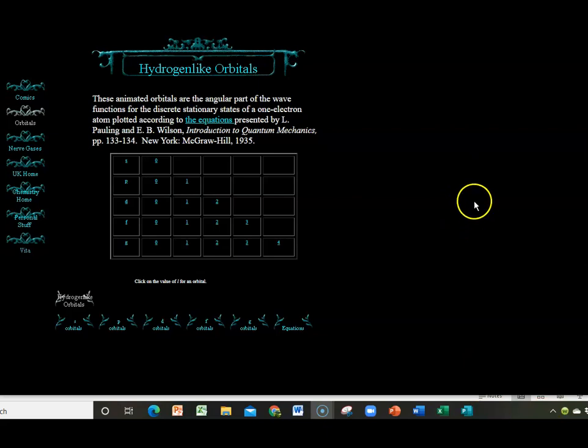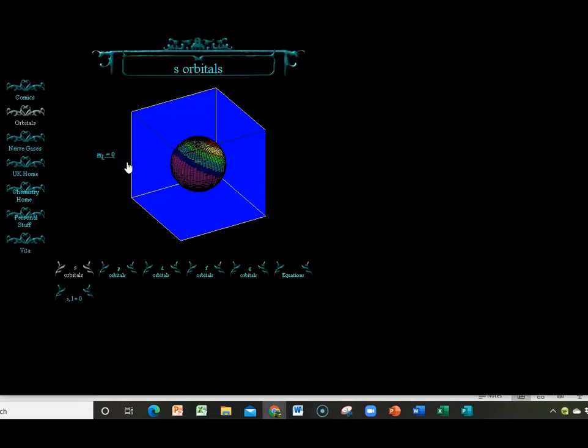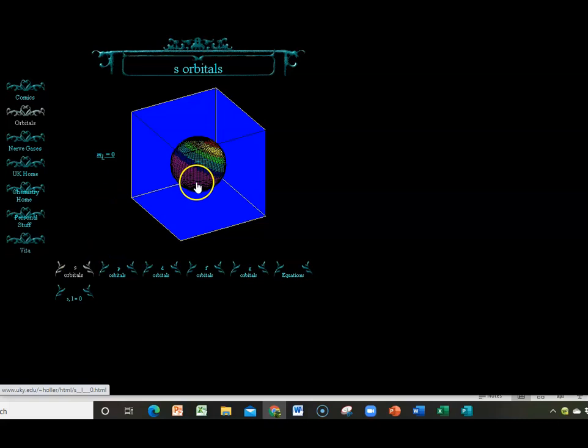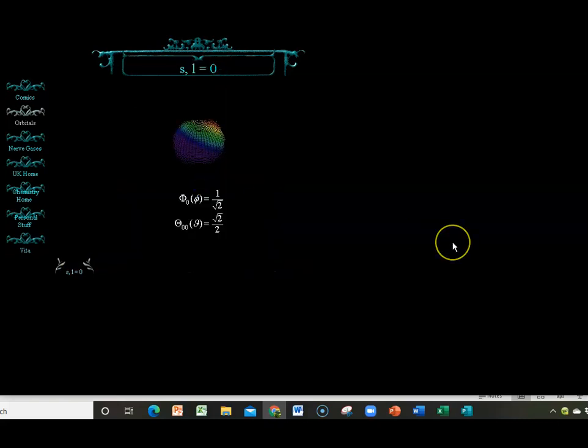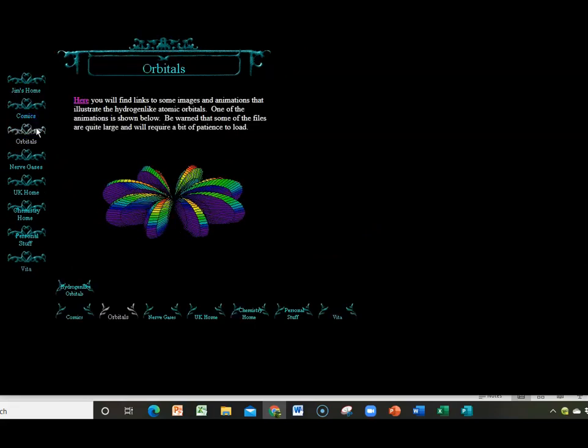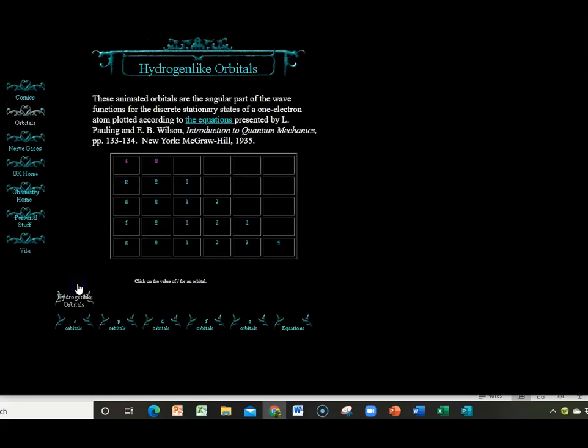Okay, so this is an orbital simulator from the University of Kentucky, and I'm going to show you hydrogen-like orbitals. So first we'll do an S, and if I click it, I can set it in motion. And then I'm going to go back to the orbitals, and I'll show you what a P looks like.